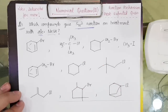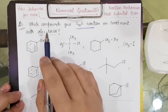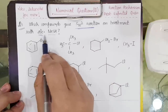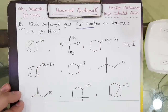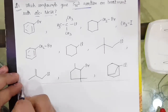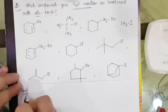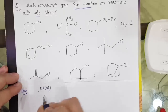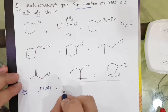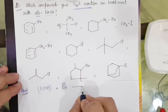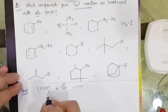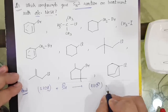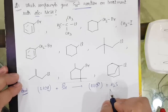The first question is: which compounds give SN2 reaction on treatment with alcoholic NaSH? Alcoholic means that ethanol is present. Since ethanol is present with SH minus, SH minus will extract the most acidic hydrogen to give the formation of EtO minus, and H2S is generated — similar to what happens with alcoholic KOH.